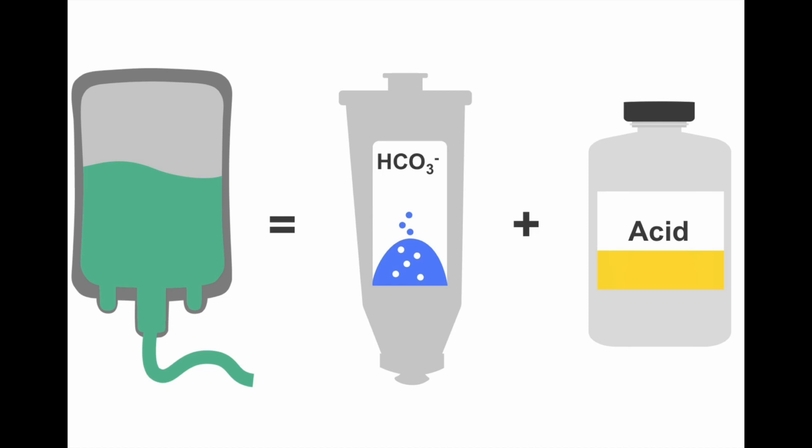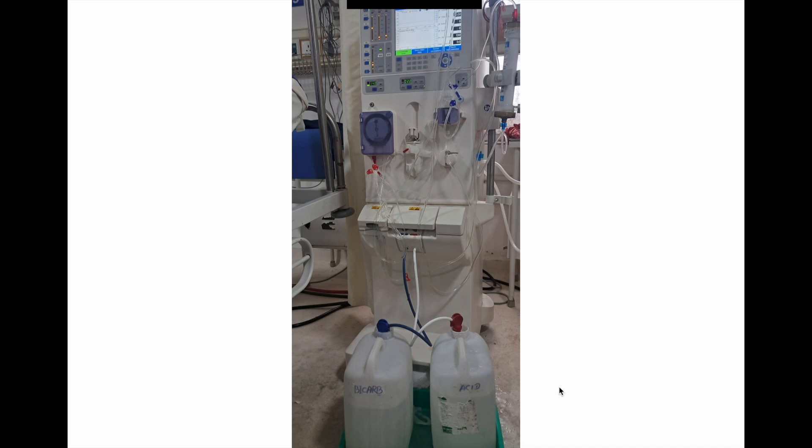The dialysate fluid has one bucket from bicarbonate and one bucket of acid. Both are aspirated by two tubes and they are mixed with the RO water, and the dialysate fluid is eventually made which goes to the dialyzer in the counter current direction. Each contains 50 liters of water and the full packet. One part of acid, 1.83 part of bicarb and 34 parts of RO water get mixed, and then that dialysate is brought into the dialyzer.